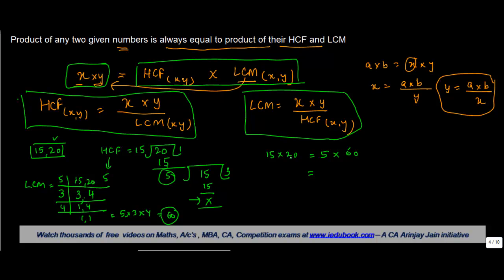If you notice, 15 into 20 is what? 300. 5 into 60 is what? 300. Hence, this property that the product of two numbers is equal to the product of their HCF and LCM holds true.